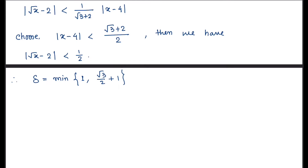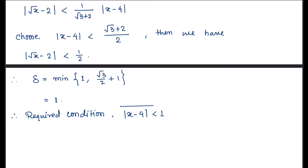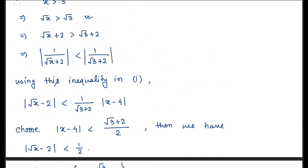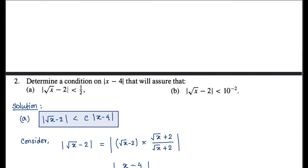Clearly 1 is the minimum of these two values. Therefore the required condition is: |x - 4| < 1.